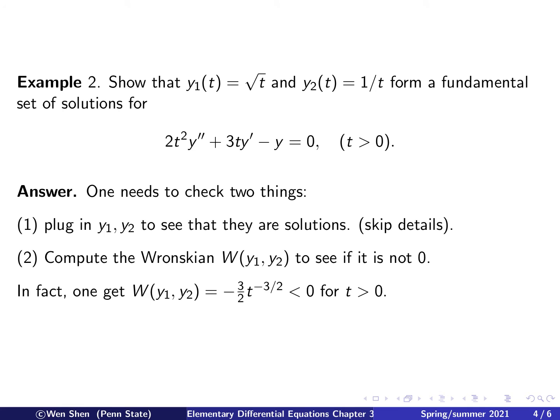That is a rather simple computation. The Wronskian is just the determinant of the matrix [y1, y2; y1', y2']. You compute that and you get this function of t. We see that it is strictly less than 0 — it will never equal 0 for t > 0, which is the interval we're interested in. Therefore, y1 and y2 are linearly independent, and they form a fundamental set of solutions for the differential equation.